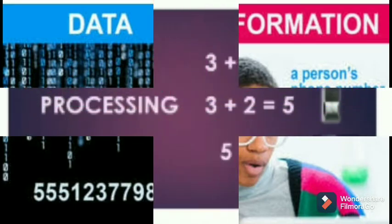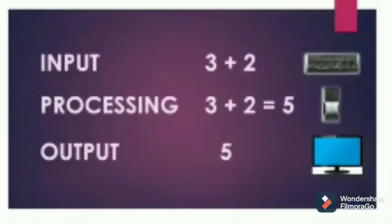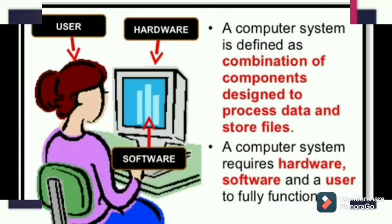For example, 2, 3, and a plus operator — they are the data. But when I process them and do the calculation, I get the answer as 5. So 2 plus 3 is equal to 5. Now 5 is the information generated from 2 and 3.